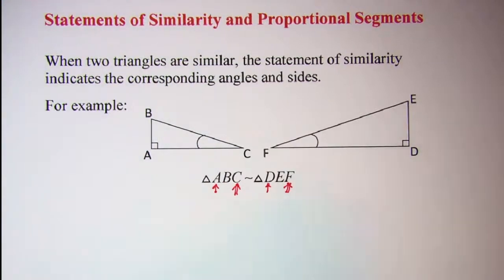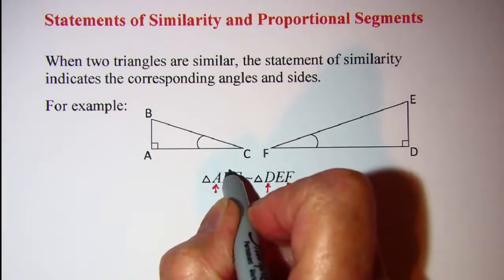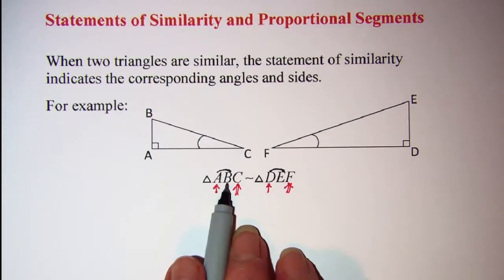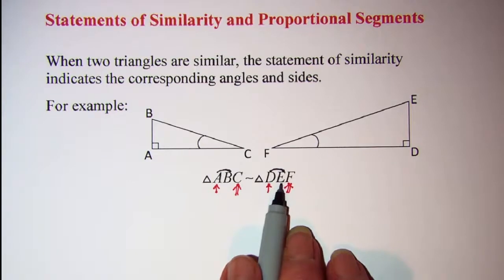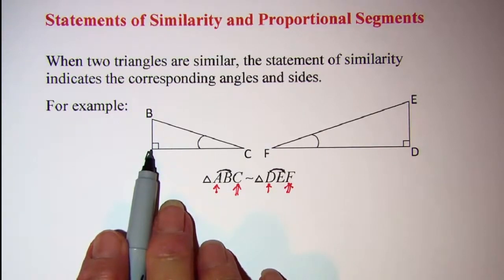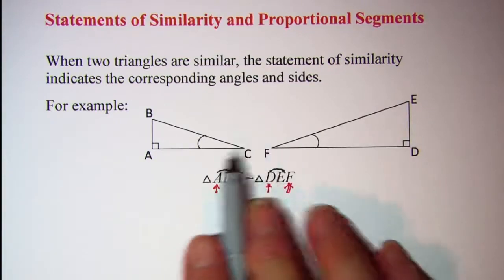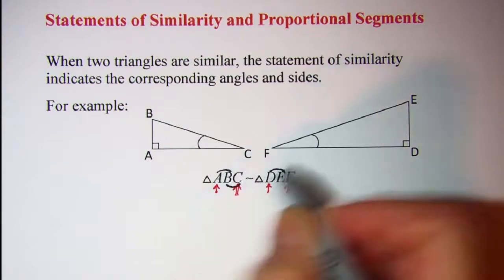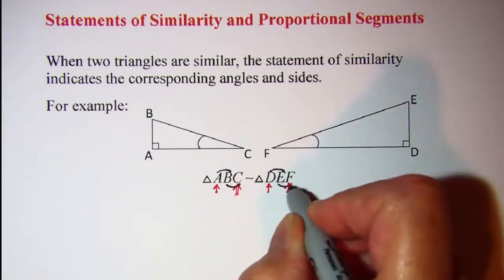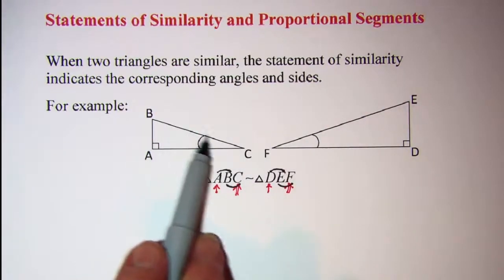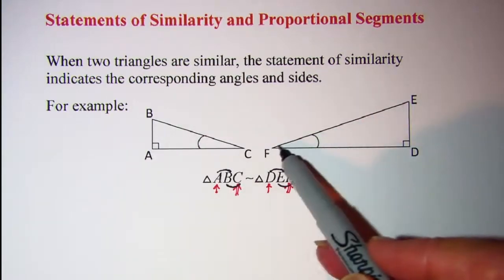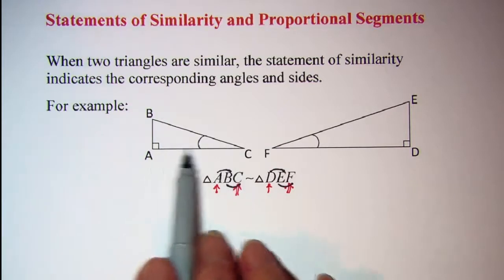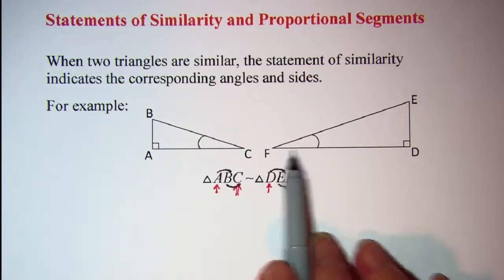If I take the first two letters on this statement and the first two on the other, line segment AB corresponds to line segment DE — AB is the vertical side here and DE is the vertical side there. Also, BC is the last two letters and EF — BC is the hypotenuse on this triangle and EF is the hypotenuse on the other. Finally, the first and last letters AC give my base, and the first and last letters DF give the base on the other triangle.